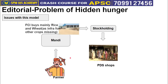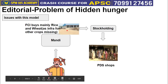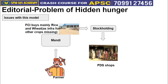FCI has a mandate to buy all 26 notified crops under MSP, but lacks the infrastructure to procure all of them. Each crop needs a different procurement system — for example, mustard requires specific grading and measurement infrastructure. In practice, MSP effectively works only for rice and wheat, as infrastructure for other crops is missing.